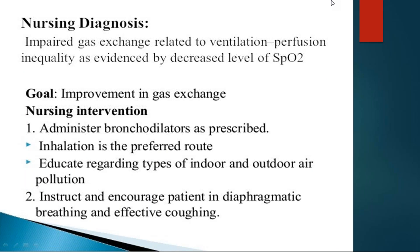Coming to nursing care: impaired ventilation-perfusion mismatch can be assessed by measuring oxygen levels using a pulse oximeter. The goal is to improve gaseous exchange. To achieve this, bronchodilators are administered mainly via the inhalation route, as this causes rapid relief by delivering the drug directly into the lungs. The patient should also be advised to avoid indoor and outdoor pollution and to practice diaphragmatic breathing and effective coughing.